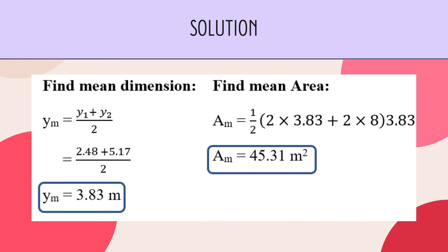Next, we find the mean dimension: Y_M equals (Y1 plus Y2) over 2. Substituting: (2.48 plus 5.17) over 2, giving a mean dimension of 3.83 meters. Then we find the mean area: A_M equals ½ times (2 times 3.83 plus 2 times 8) times 3.83, giving a mean area of 45.31 m².